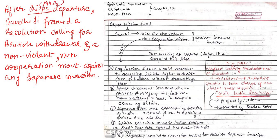After the Cripps Mission's departure, Gandhiji framed a resolution calling for British withdrawal and a non-violent non-cooperation movement against Japanese invasion. The Congress Working Committee met at Wardha on July 14, 1942, and this meeting accepted the idea of a non-violent non-cooperation movement. This resolution was accepted in the Congress Working Committee in 1942.